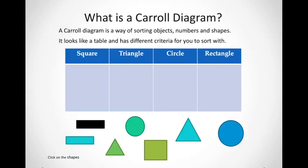So firstly we need to know what is a Karel diagram. It is a way of sorting objects, numbers and shapes. It looks like a table but it has different criteria for you to sort with.